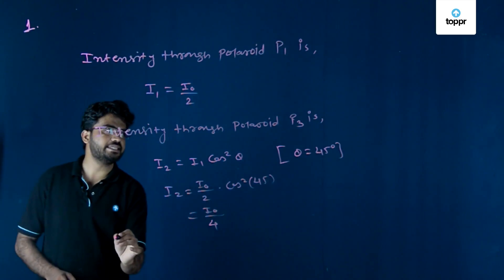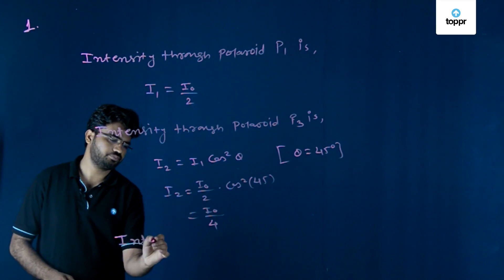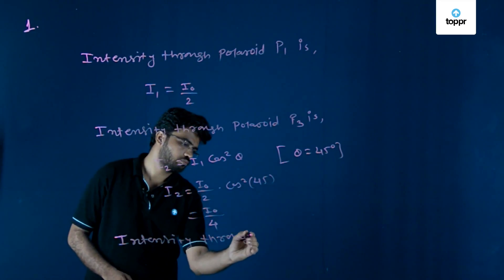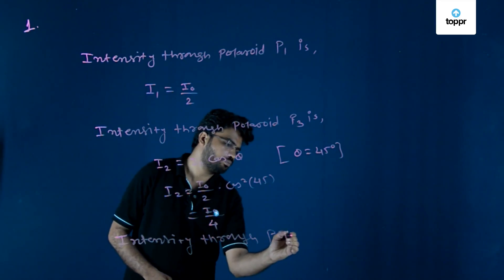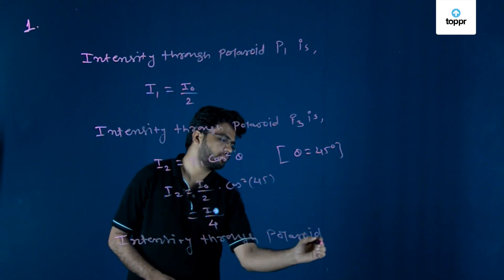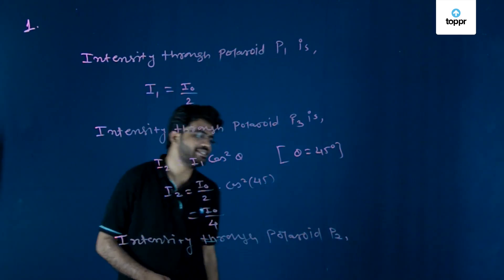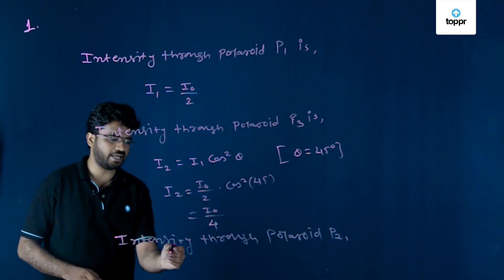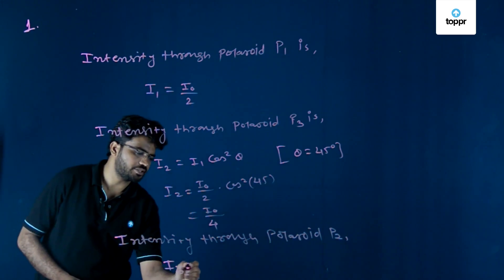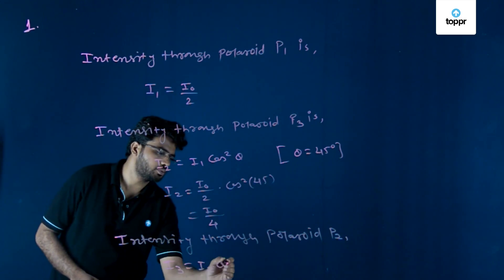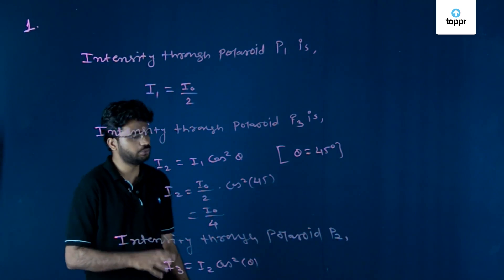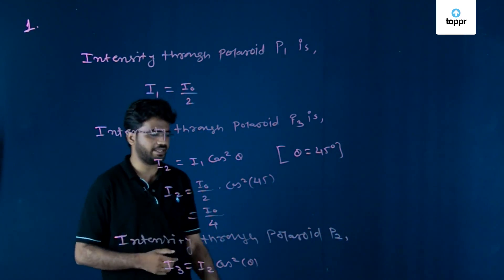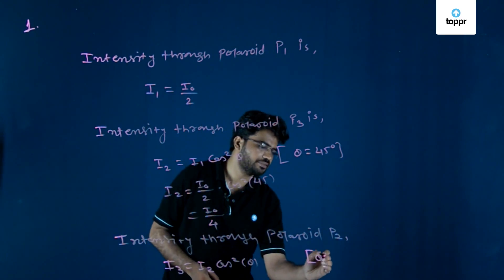Now, intensity through Polaroid P2 is given by I₃ equals I₂ cos²θ, and here the angle between P2 and P3 is 45 degrees.